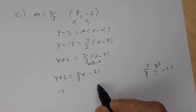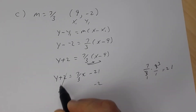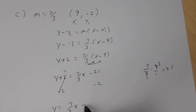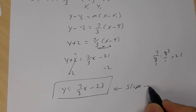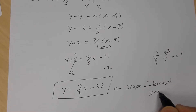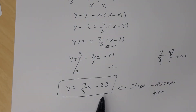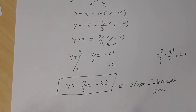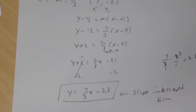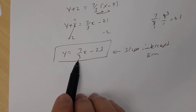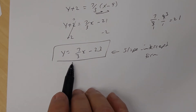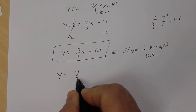Subtract 2 from both sides: y equals 7/3 x minus 23. That's slope-intercept form. The y-intercept is negative 23. To get standard form, clear the fractions — the LCD is 3. Multiply both sides by 3: 3y equals 7x minus 69. Bring the x term to the other side: negative 7x plus 3y equals negative 69. That's standard form. Alternatively: 7x minus 3y equals 69.